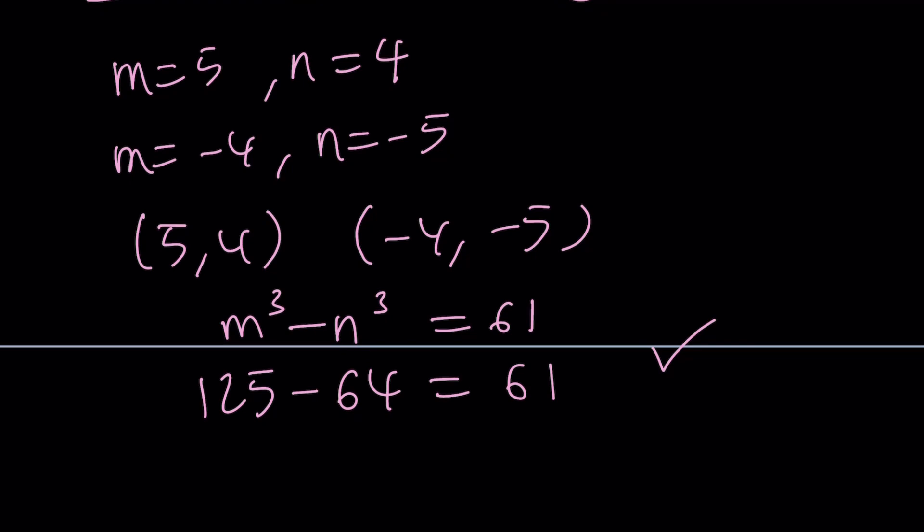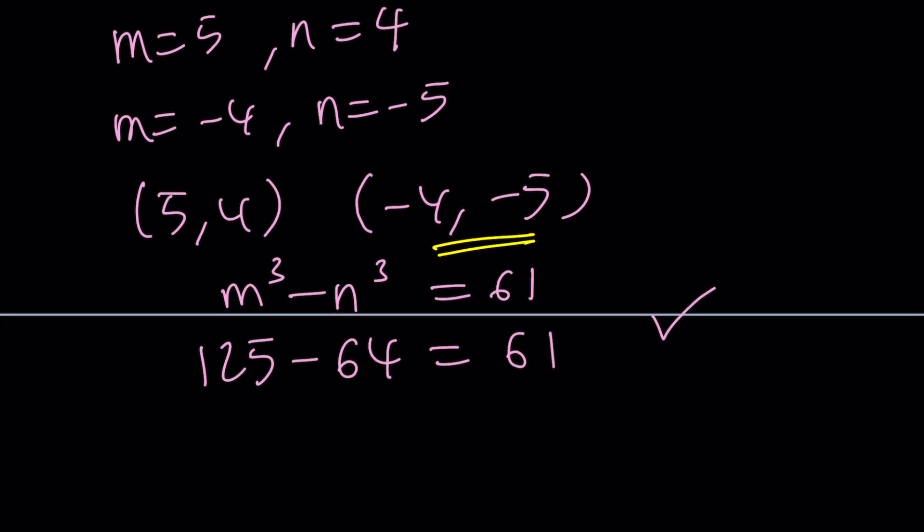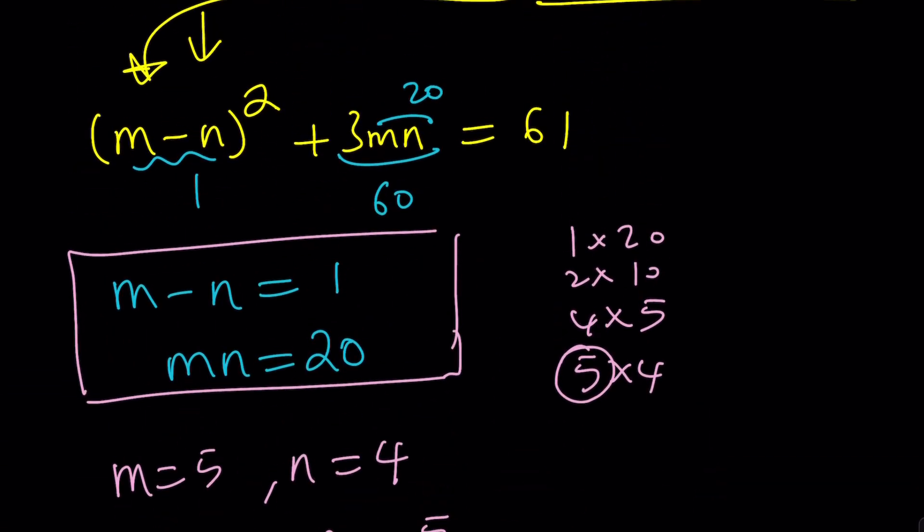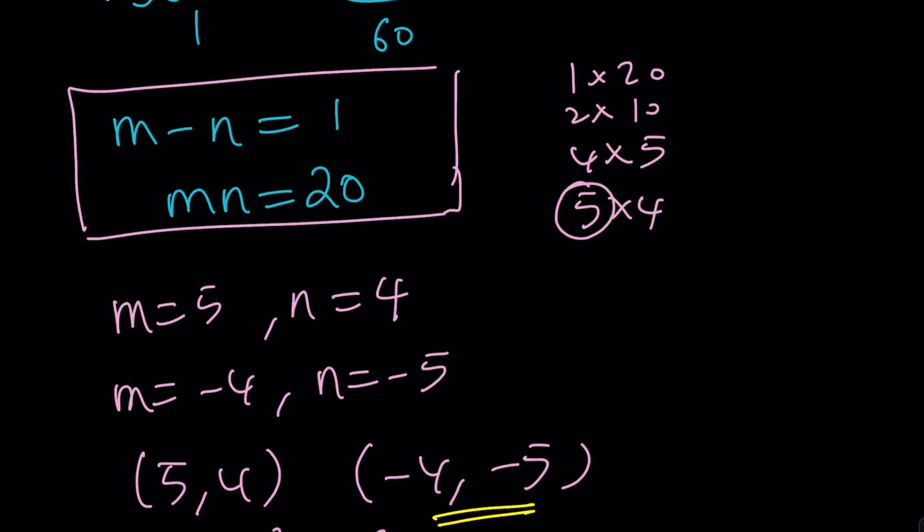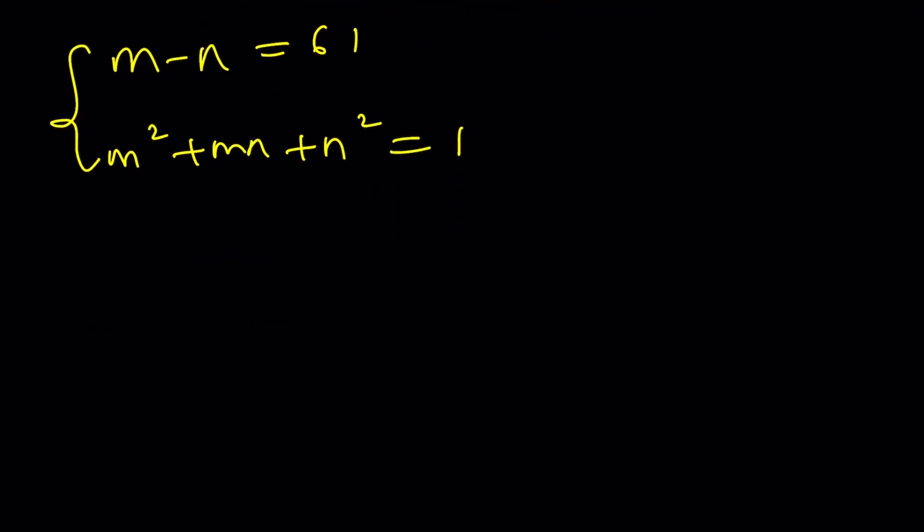These are the solutions that I got so far, and the second one is going to satisfy. But how do I check the other case? The other case is when 1 and 61 are switched around. So we have m minus n equals 61, and m squared plus mn plus n squared equals 1. By doing this, you're going to go through the same thing. m minus n squared plus 3mn equals 1, and m minus n equals 61. I got 61 squared. What is 61 squared? I think it's 3,721. Plus 3mn equals 1.